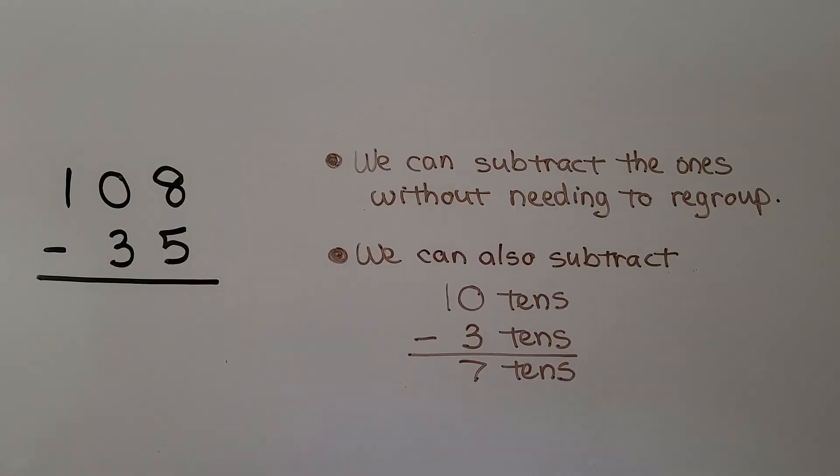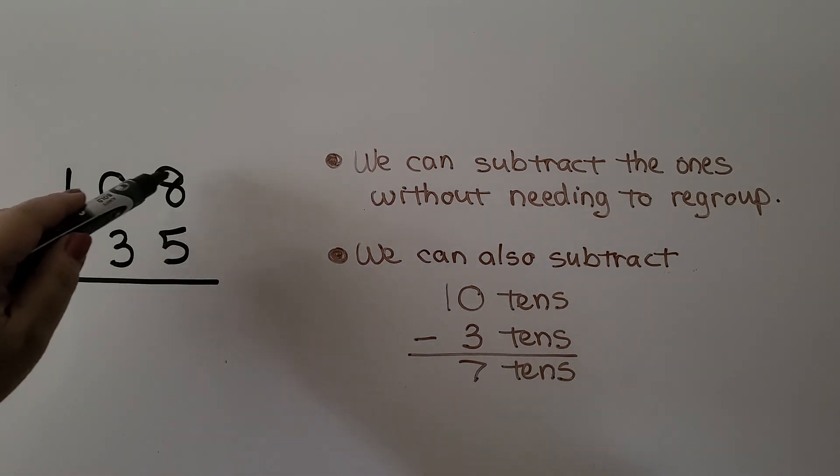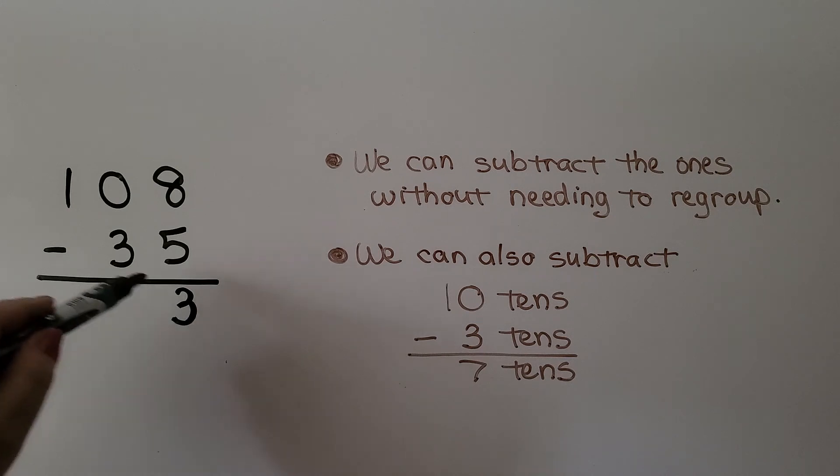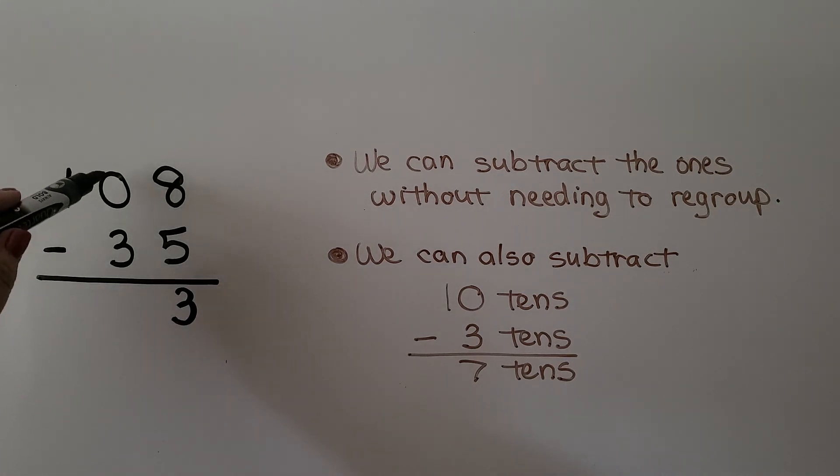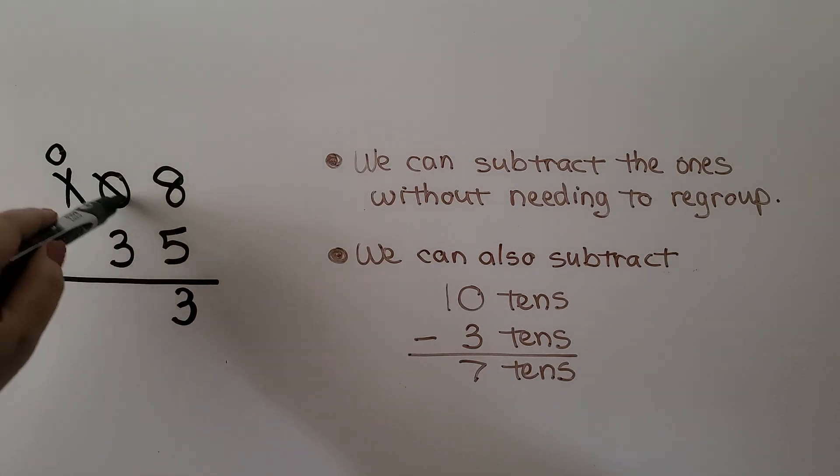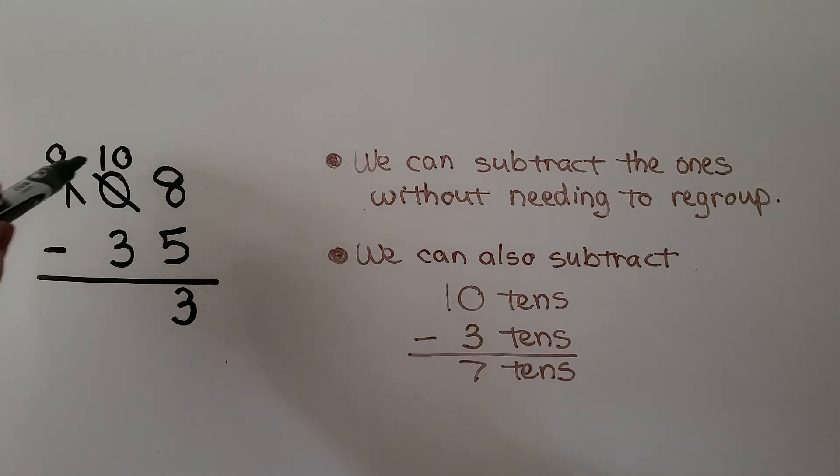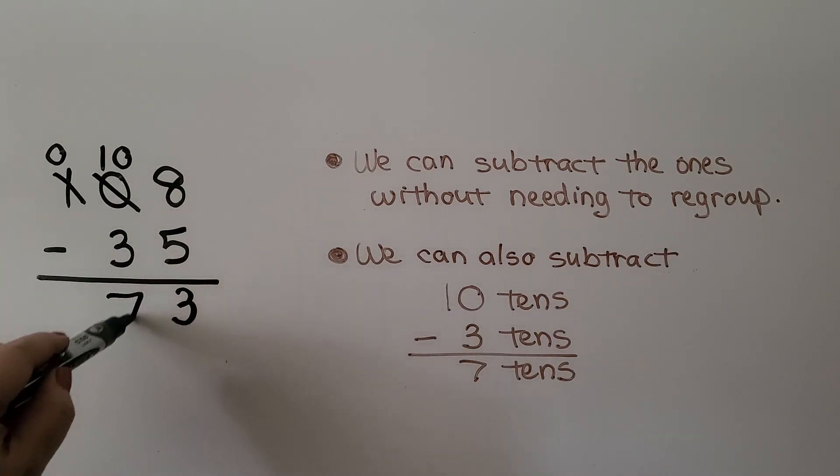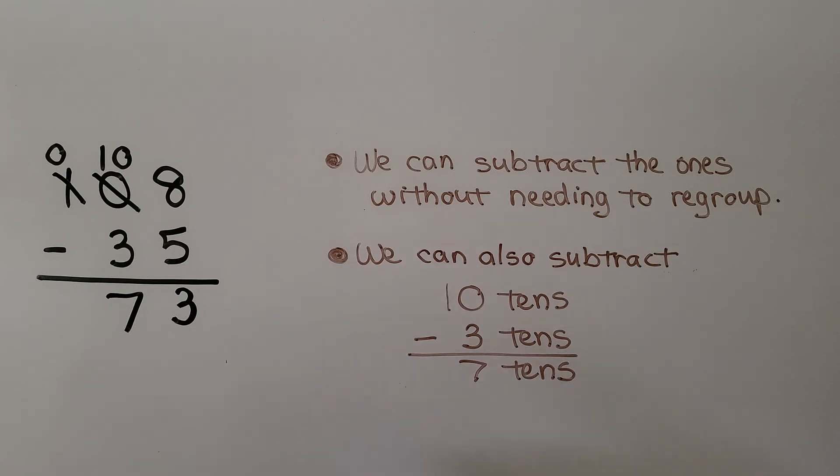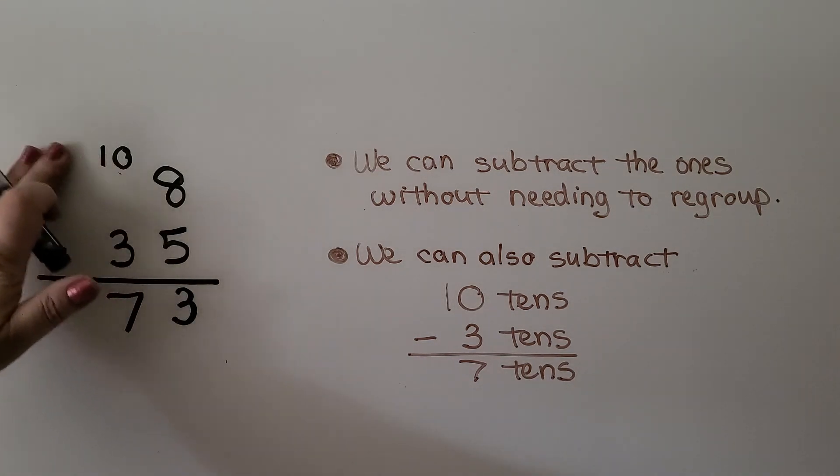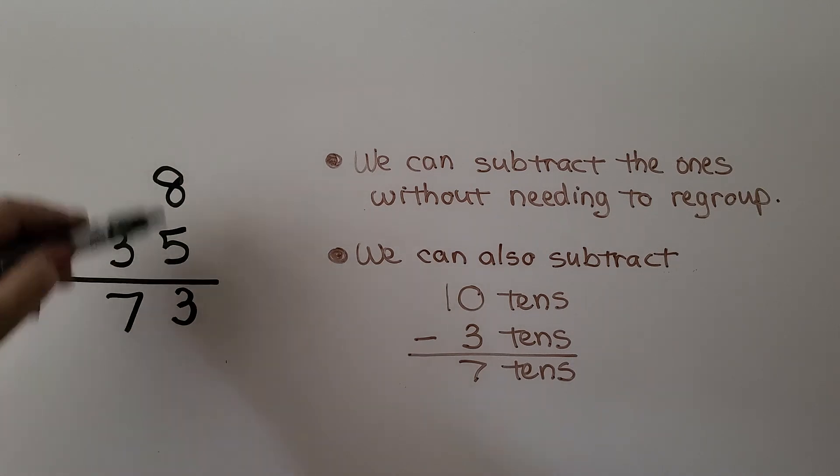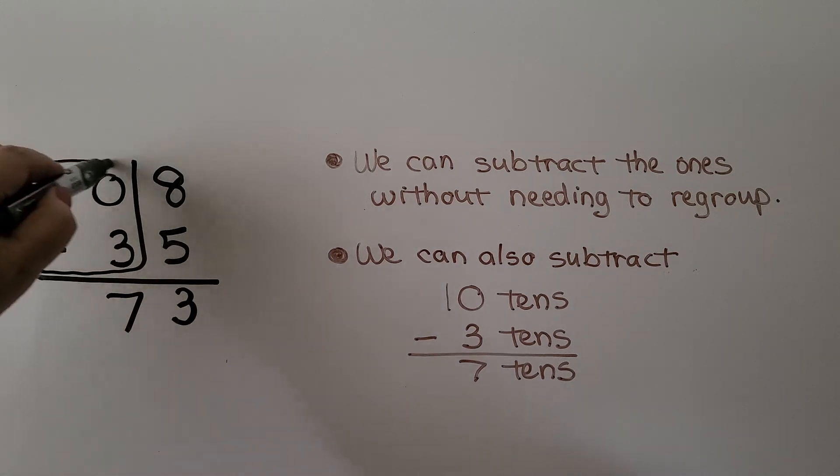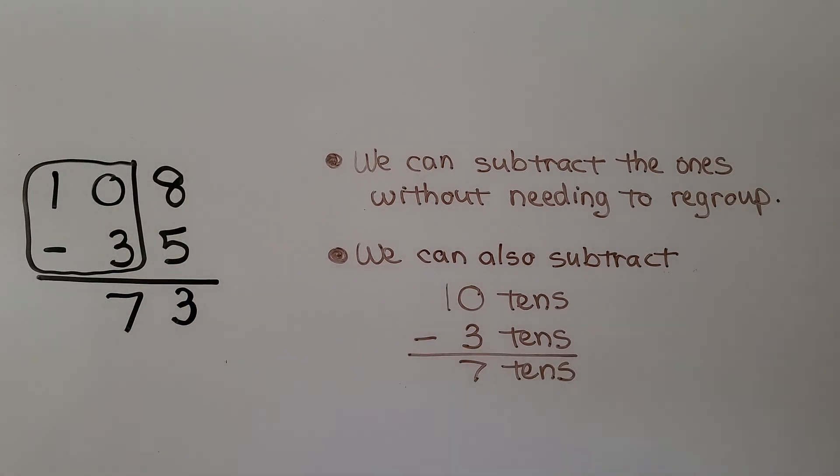Here we have one hundred eight minus thirty-five. We can subtract the ones without needing to regroup. We have eight. We're taking away five. That's three. Now we have zero tens and we need to take three away. So we can cross this off and it'll become a zero. And now the tens place is ten tens. Ten tens minus three tens is seven tens. Once we subtracted and got the ones out of the way, we could have looked at this as ten tens minus three tens is seven tens.